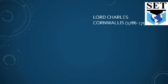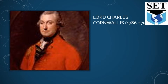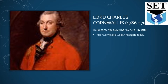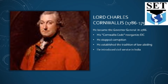After Warren Hastings, another important figure was Lord Charles Cornwallis, who served as Governor General from 1786 to 1793. He became the Governor of Bengal in 1786. His Cornwallis Code reorganized the East India Company. He stopped corruption and established the tradition of law-abiding governance. He introduced civil service in India and introduced the Sunset Law. Employees were paid much higher wages, which stopped them from trying to get money through corrupt means.